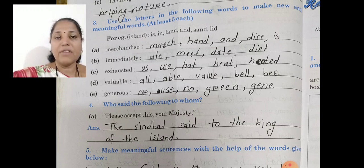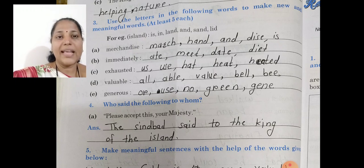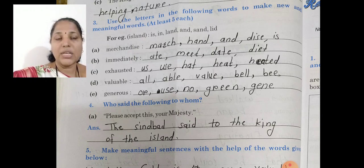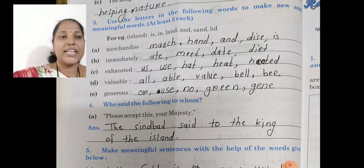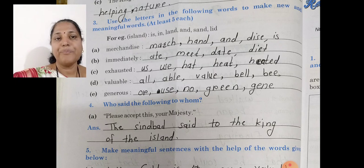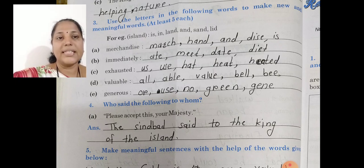Third is the word 'hesitate.' So we make the spellings: us, use, h-e-t, hat, heat and heated — h-e-a-t. Heat ka matlab hota hai 'garam' aur 'heated' ka matlab hota hai — yeh heat ka past tense hai. Okay, then after 'c' is hesitate: us, use, hat, heat and heated.